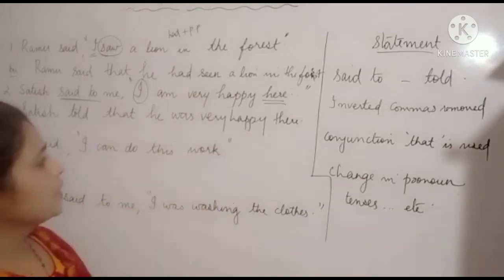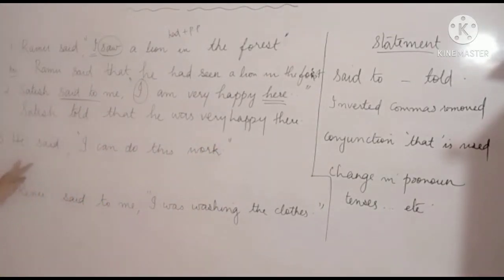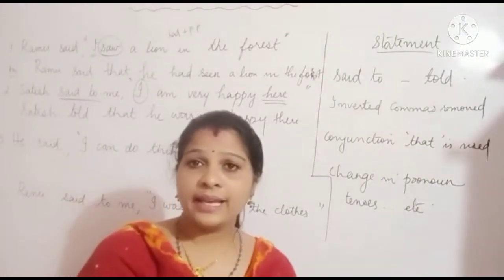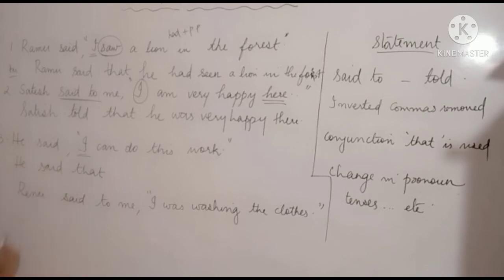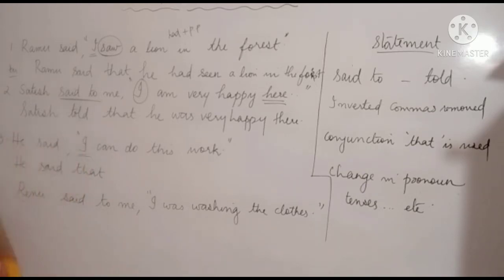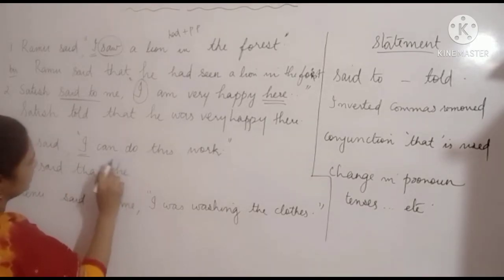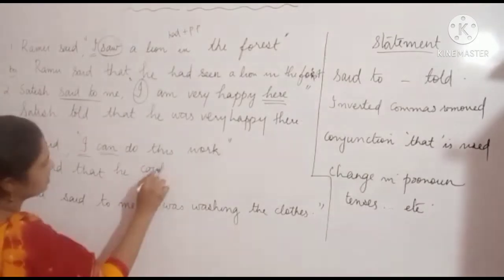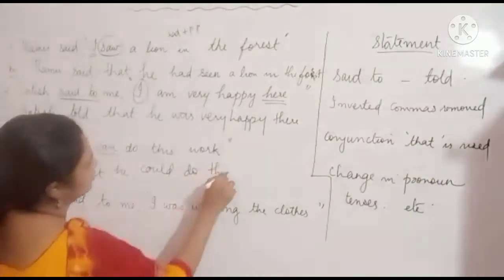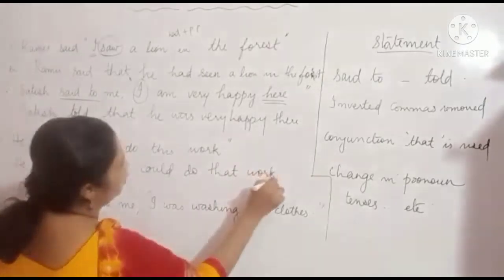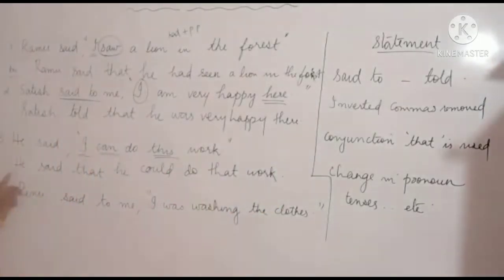Third: 'He said, I can do this work.' We write: He said that. 'I' is first person, so we change it according to the subject — 'he'. 'Can' changes to its past form 'could'. Answer: He said that he could do that work.